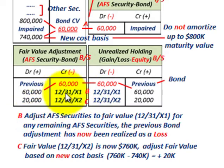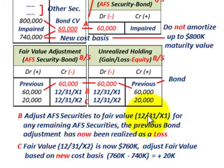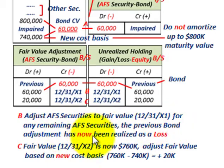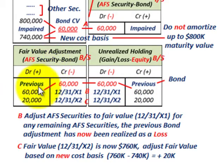To summarize: at 12-31-X1, you adjust your available-for-sale securities to fair value for any remaining available-for-sale securities. The previous bond adjustment has now been realized as a loss, so it's no longer included in the unrealized holding gains or losses — now we adjust the remaining securities up.